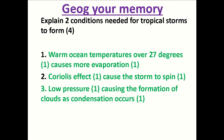Give yourself a mark out of four. There are other options you could talk about in your answer. You could mention low shear winds — these are basically the small winds that take place in the atmosphere. If you have low shear winds, your storm can form, because strong shear winds would cause your storm to be broken apart. Another condition could be to do with location — it has to be just north or south of the equator because of the Coriolis effect, so you could bring your location on Earth into that point as well.